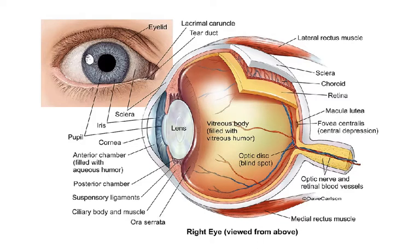This is a diagram showing you the front view of the eye and the transverse section of the eye. The first thing to note is the lens. The lens divides the eye into the front part and the back part, and the anterior chamber is filled with a fluid called the aqueous humor.